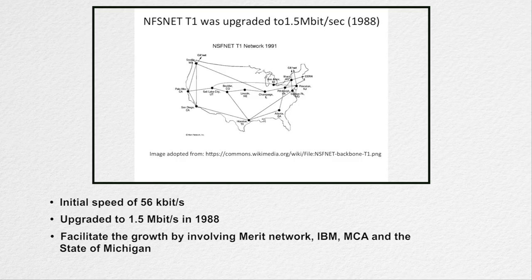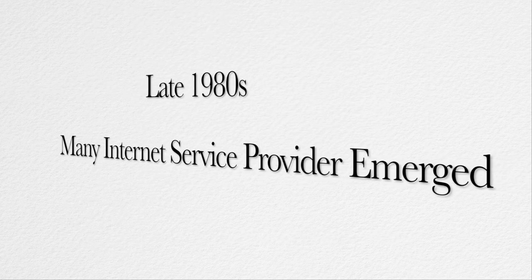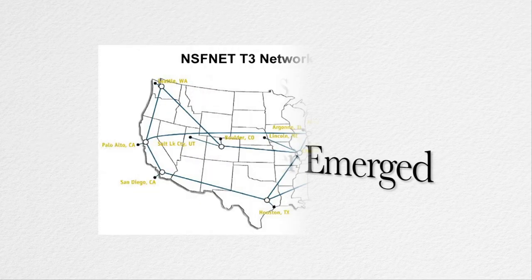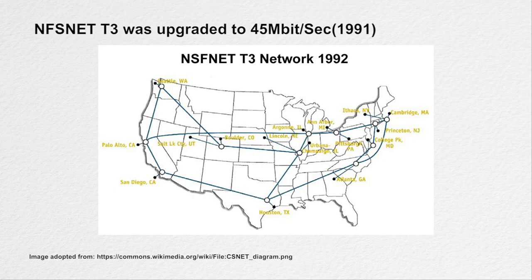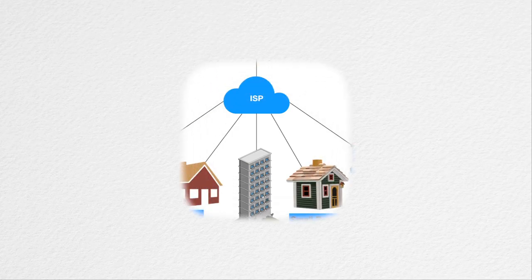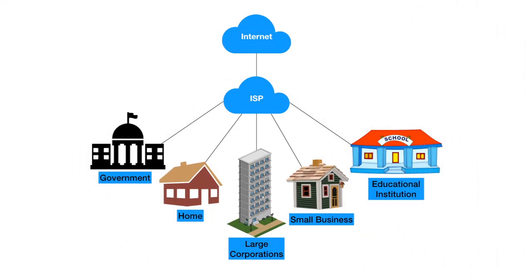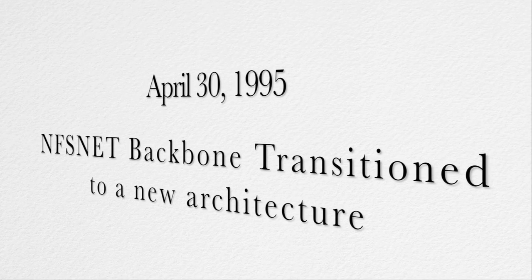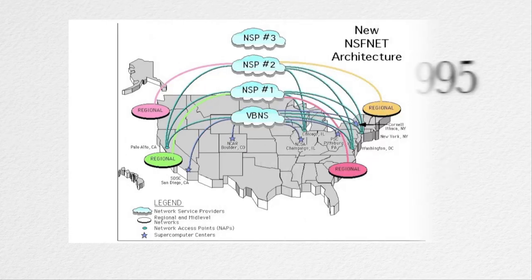After corporations realized the strength and merit of this network, they participated in its development to reap its benefits. By the late 1980s, many internet service providers emerged to provide the backbone for carrying network traffic. By 1991, NSFnet was expanded and upgraded to 45 megabits per second. Many commercial ISPs provided backbone service and it was popular among corporates. On 30th April 1995, the NSFnet backbone service was successfully ported to a new architecture and the NSFnet backbone was decommissioned. Now the internet could carry commercial traffic.